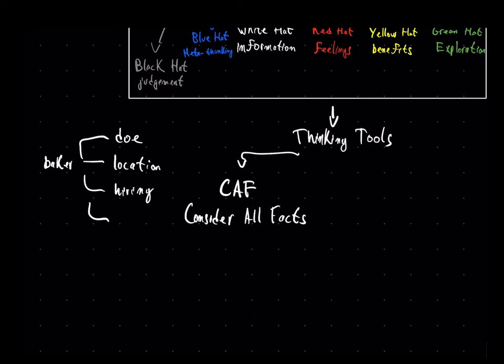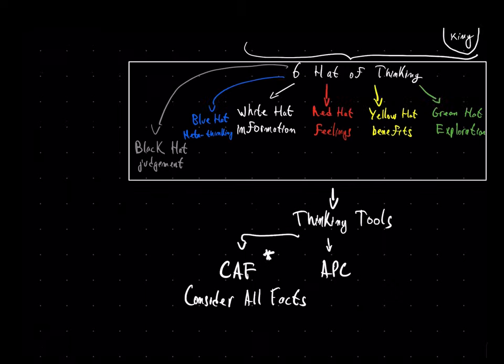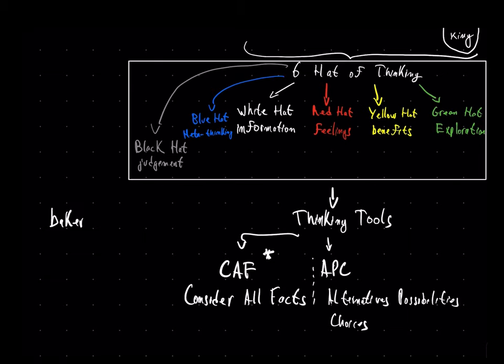There's also the APC tool, or Alternatives, Possibilities, and Choices. Now, this is a thinking tool that refers to the idea of considering all the alternatives for a given situation.